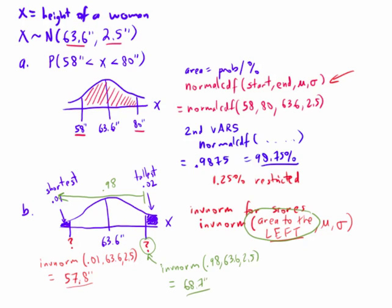So the new height requirements should be 57.8 inches to 68.7 inches. That would be the new restrictions for women to join the army if we wanted to cut out the bottom 1% and the top 2%.